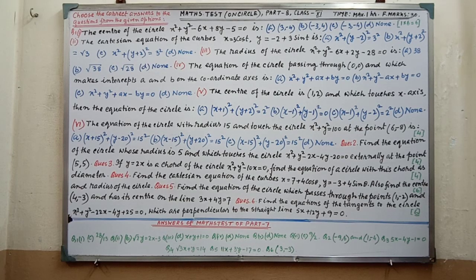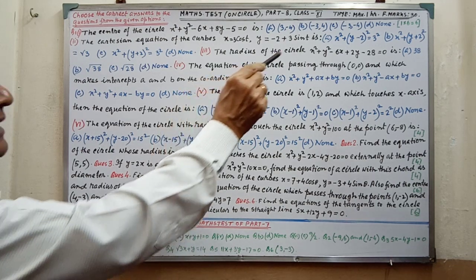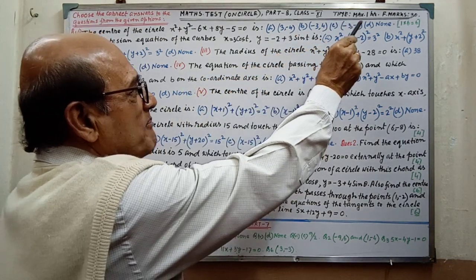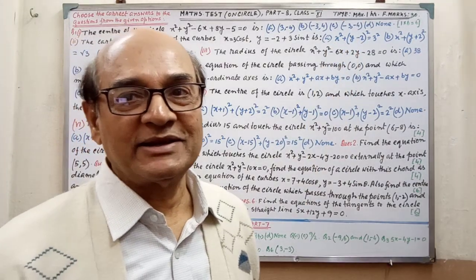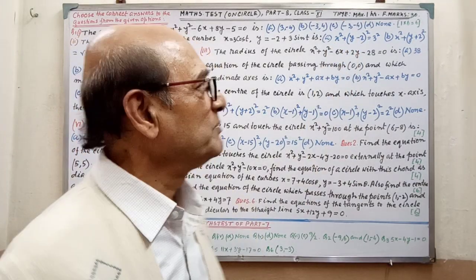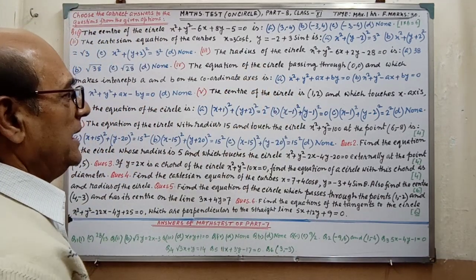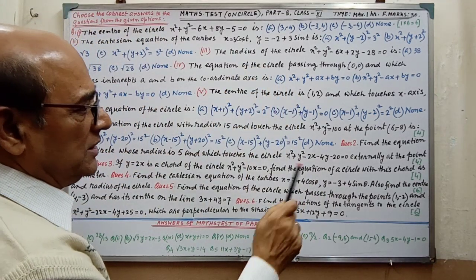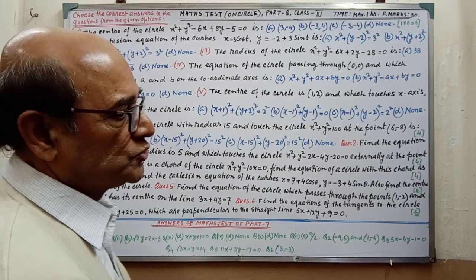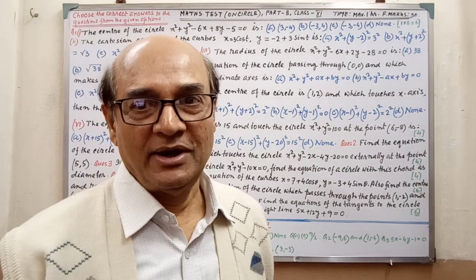Hello children, good morning to all of you. Today for Class 11 Maths test on circle, part 8 - you have already given 7 tests, this is the 8th. Here time is vital, maximum 1 hour, and full marks that is well known to be 30. There are 6 MCQ and 3 short questions and 2 broad questions, total 30.